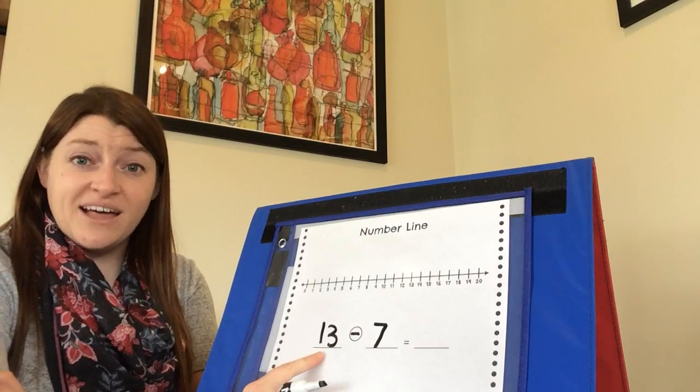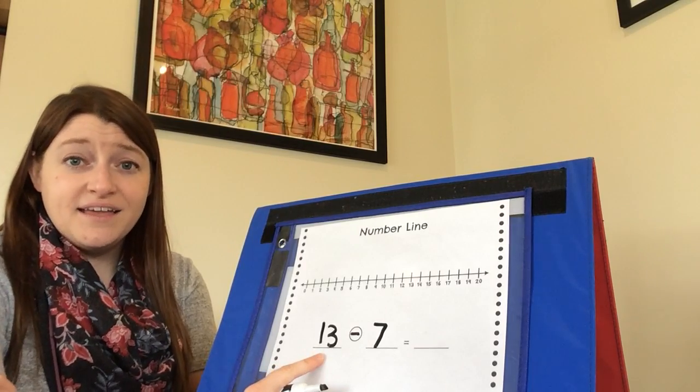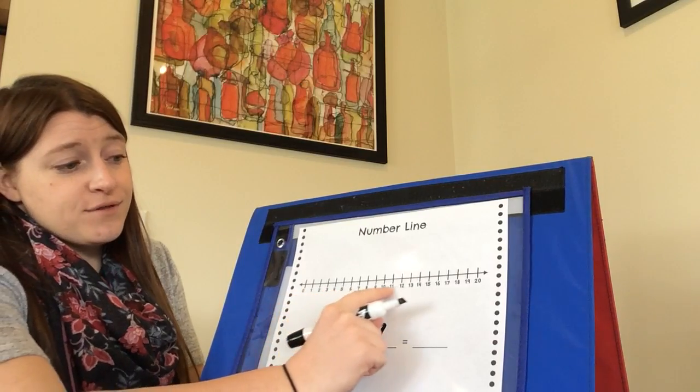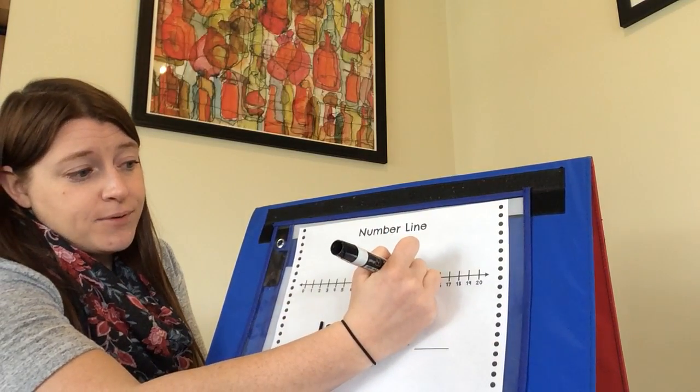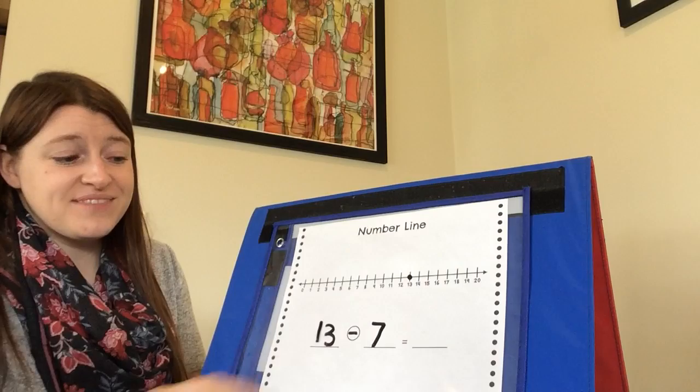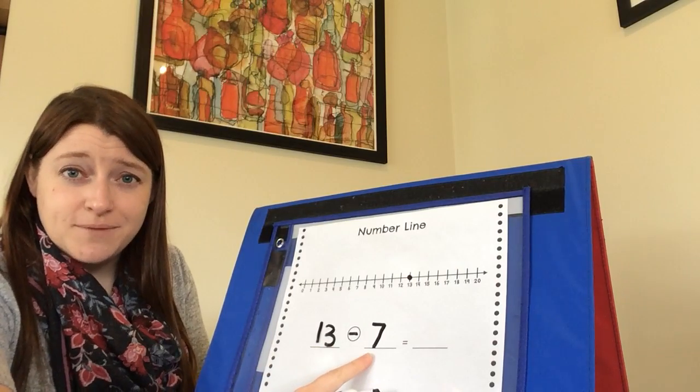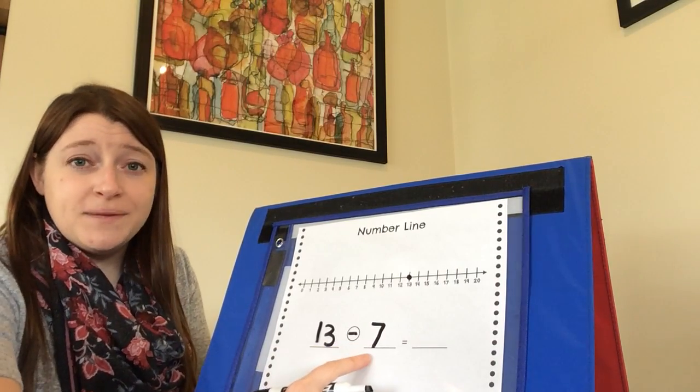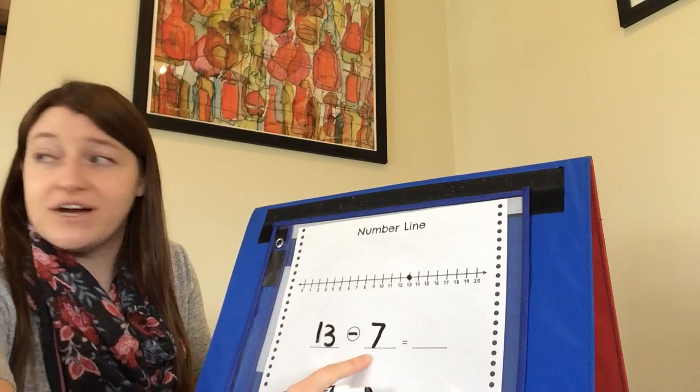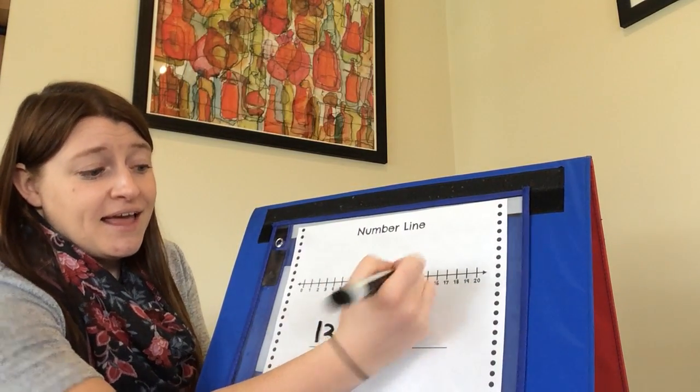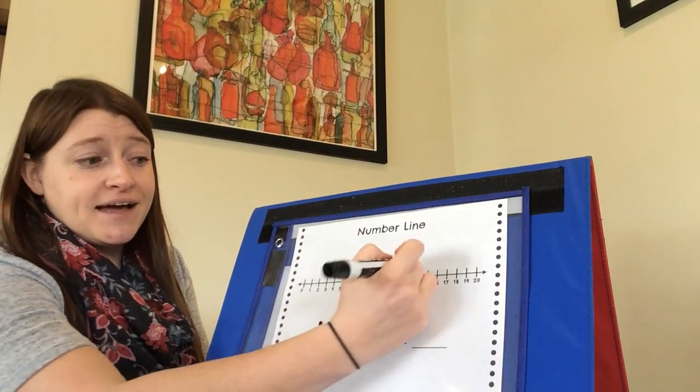Thirteen minus seven. The thirteen tells me where to put my dot. That's where I'm starting. So I'm going to find the number thirteen on the number line and put my dot there. Seven, the next number in my number sentence, tells me how many times to hop backwards in a subtraction problem. So I'm going to start at my dot and hop backwards seven times.